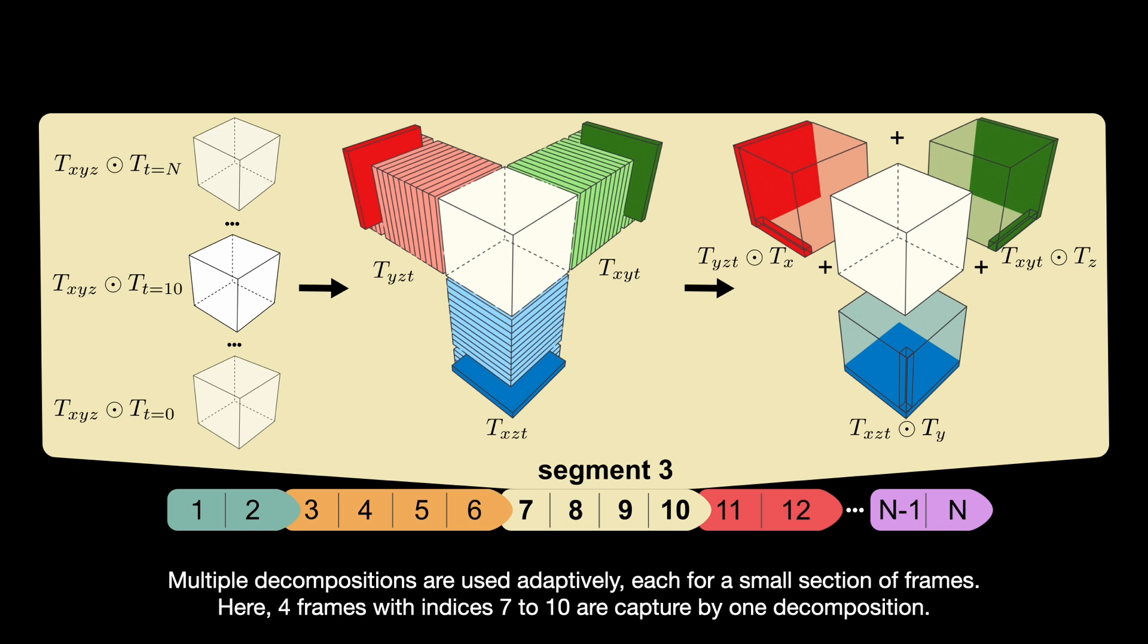Best results are achieved by decomposing the sequence into multiple segments, with each segment representing only a small number of frames that is chosen adaptively. In the example above, 4 frames with indices 7 to 10 are captured by one segment.